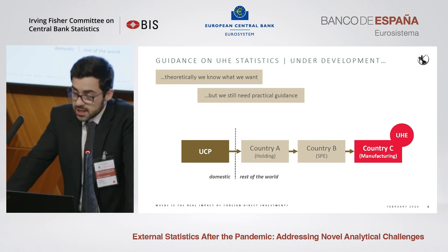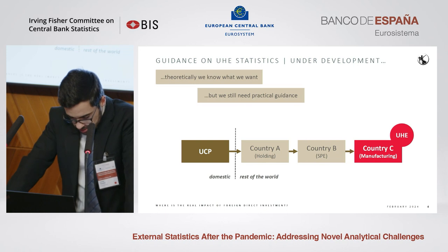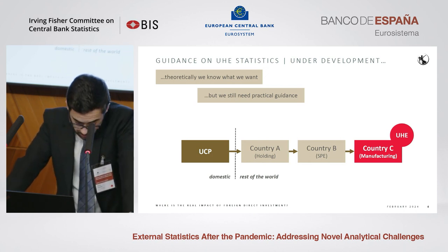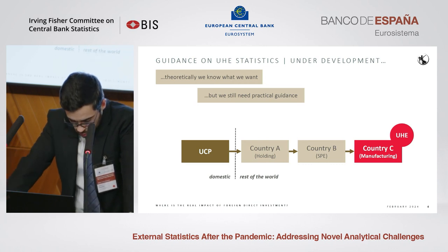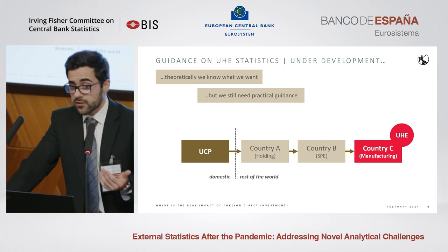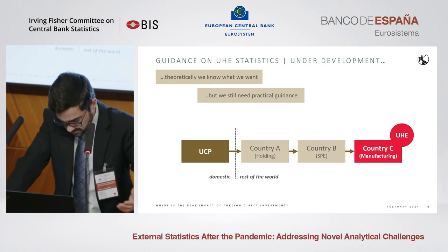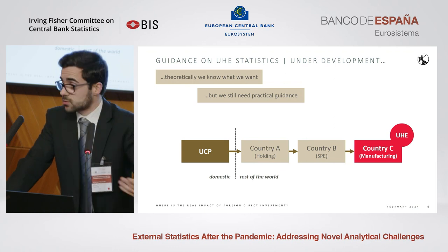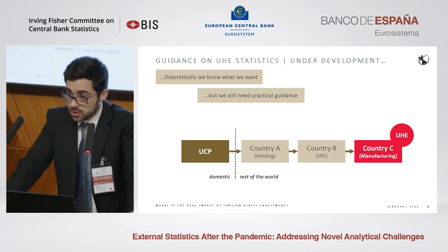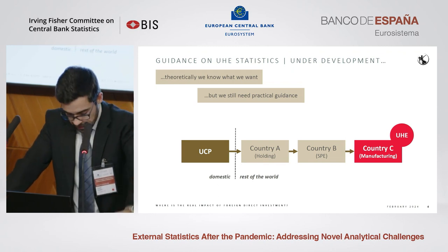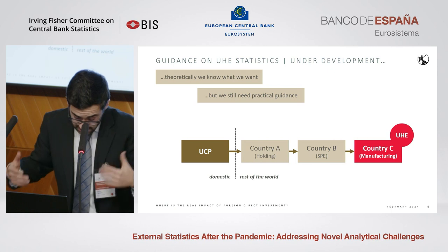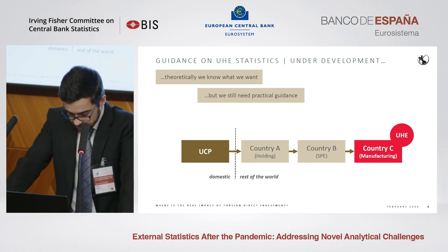Theoretically, we know what we want: the ideal objective would be to produce UHE statistics allocating the investment to the economy or economies where productive activities are taking place — to find the economies where FDI is producing its real economic effects. However, in practice this is very difficult because ownership structures are increasingly complex, with MNEs channeling their investments through large chains of SPEs or even operating units. This means we need a significant amount of data and there is a high degree of complexity.